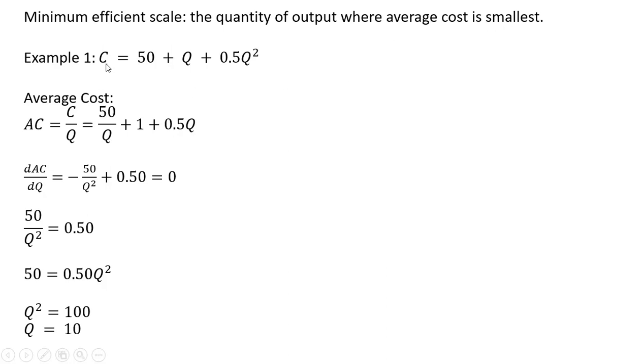We'll start with the firm's total cost equation, C equals 50 plus Q plus 0.5Q squared. So to find the efficient scale, step one is to get average cost.